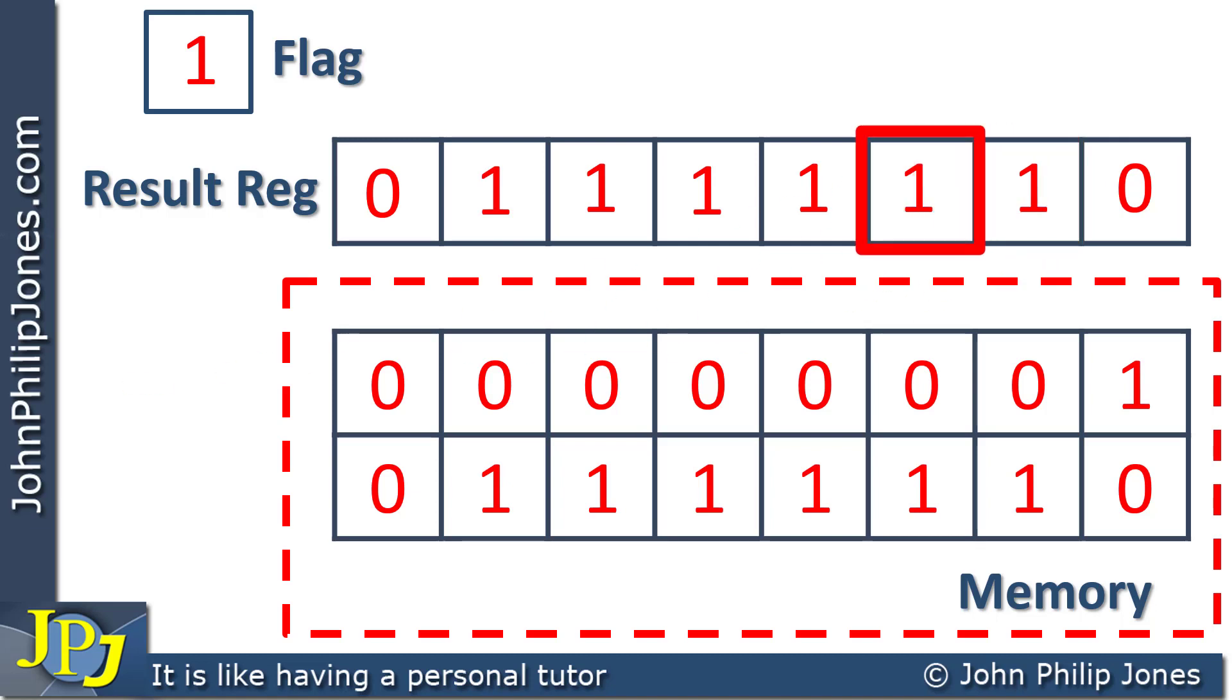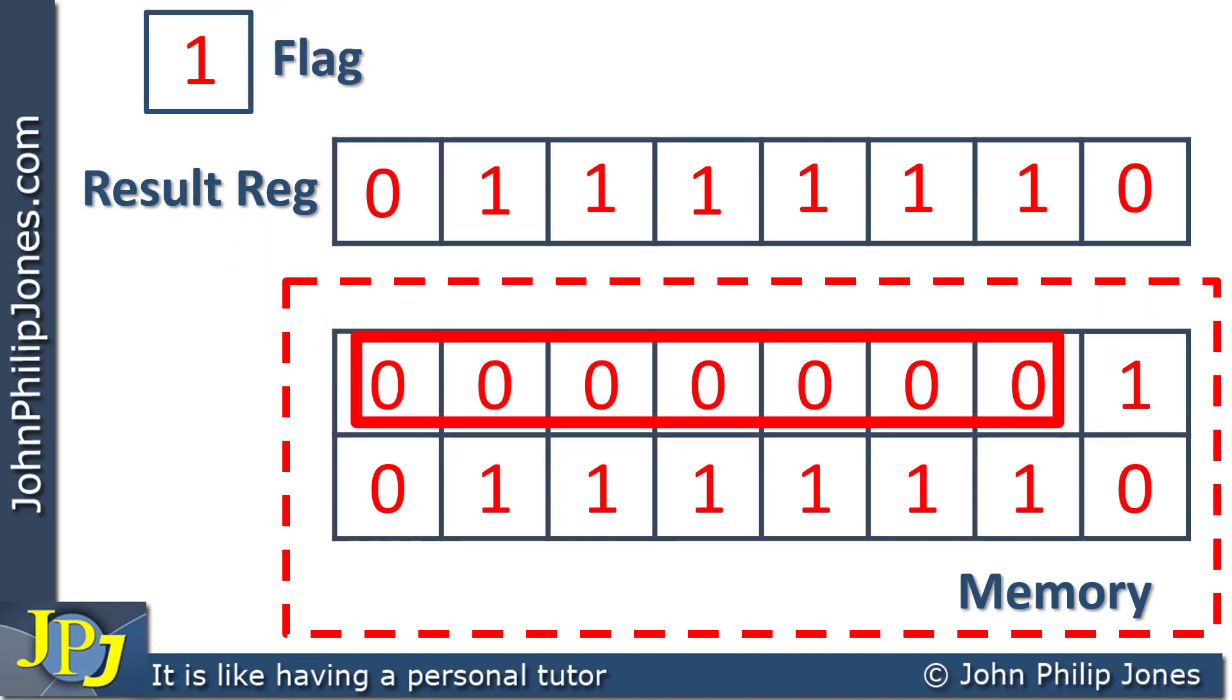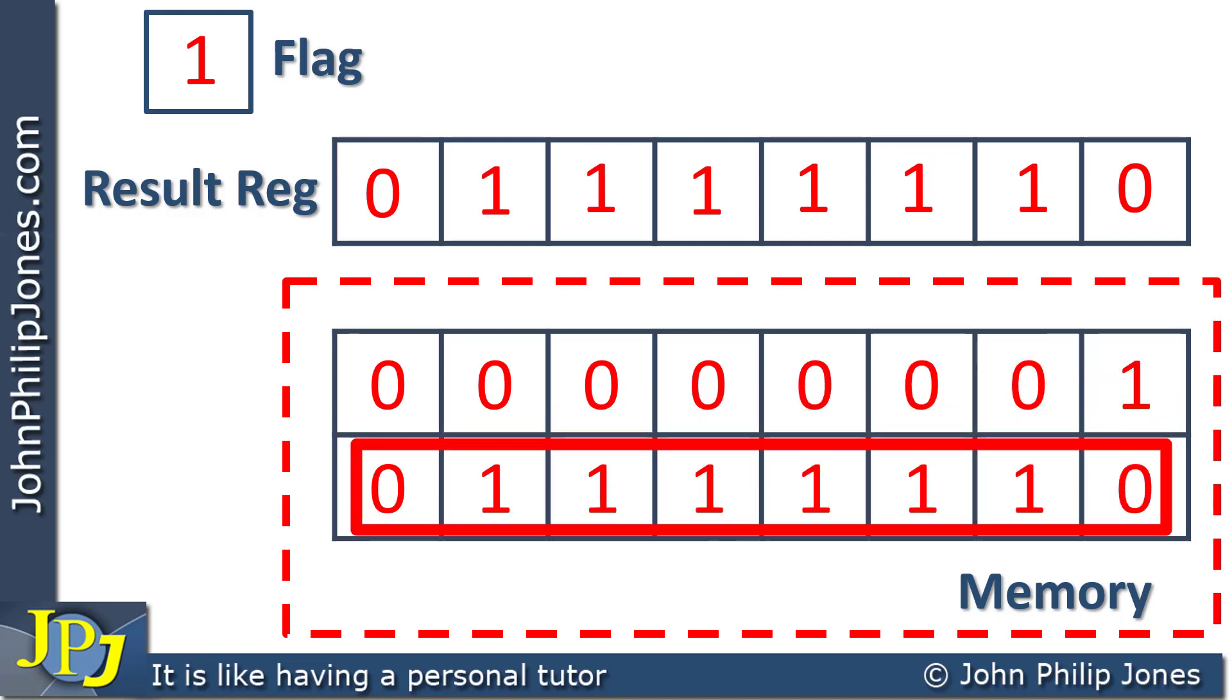If you consider the place value of this, it's worth 2. This is 4, 8, 16, 32, 64. And the place value of this is 128. Now it doesn't have anything in it, but the place value is 128. So the place value of this is 256. If you imagine you had a 9-bit register, this here, which are the seven zeros and the one, this one is worth more in terms of its place value than all of these ones added up.